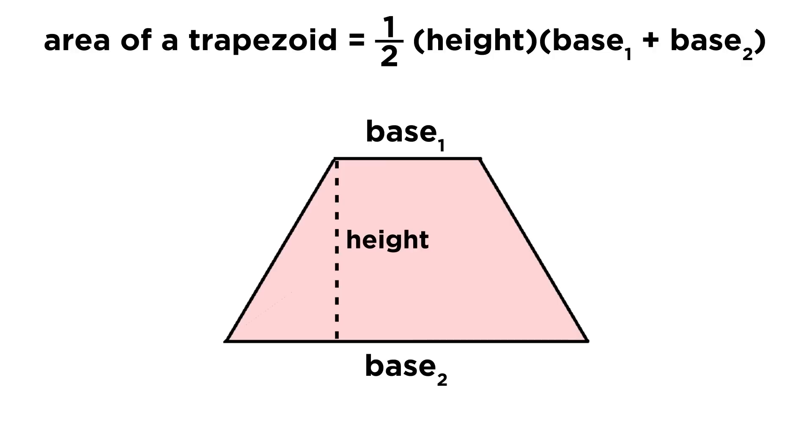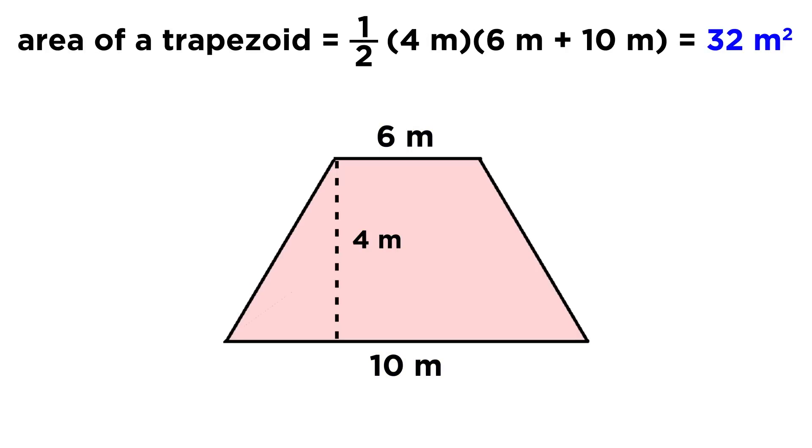Trapezoids are a little different. For these, we do one half the height times the sum of the two bases. So with bases of six and ten meters, and a height of four meters, we plug these all in to get an area of thirty-two square meters.